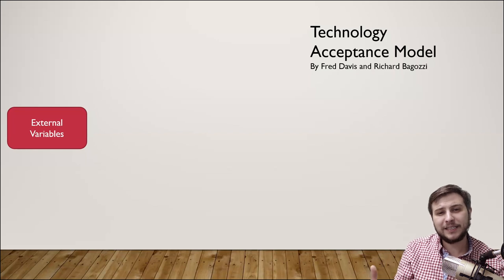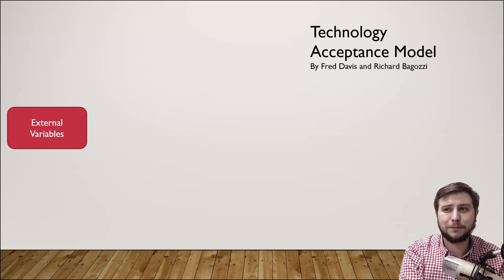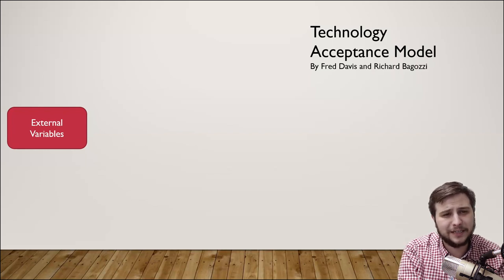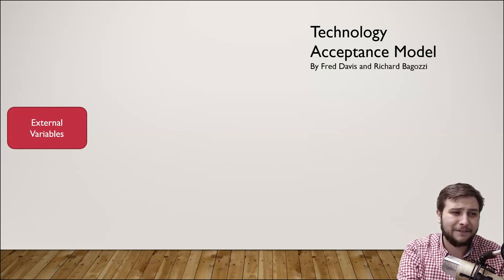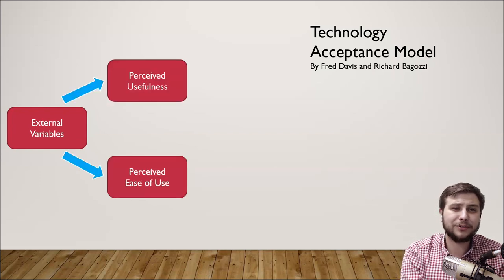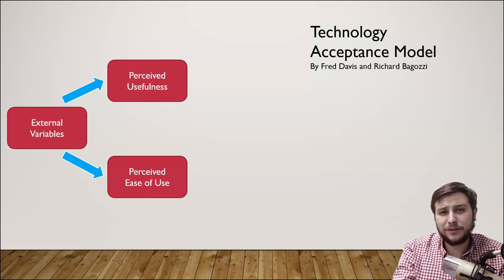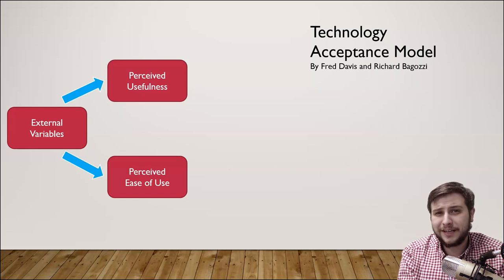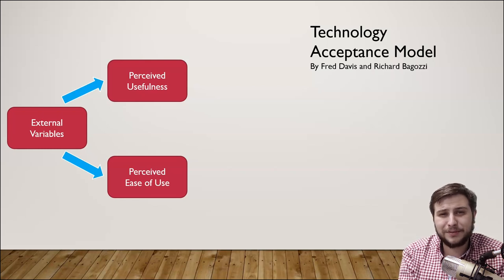The Technology Acceptance Model really looks like this. You first have your external variables — this could be a person's predisposition to a certain type of technology, like a computer or an iPad, or whether they've used something similar before. Those external variables create two sets of things a user is evaluating: first, perceived usefulness — do they think it's useful to their everyday life? — and perceived ease of use — how much training is going to be needed? Can I pick this up and go, or will I need to read technical manuals before getting started?